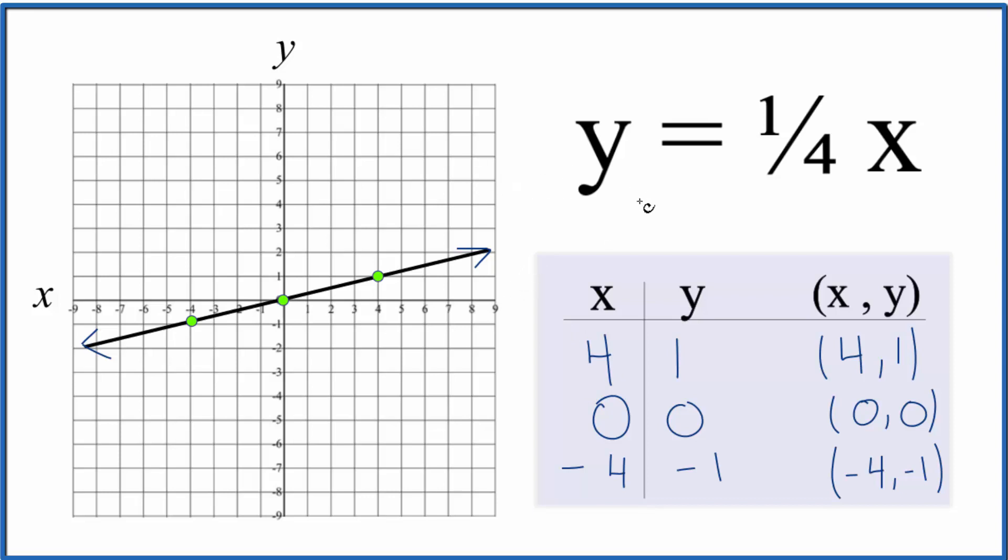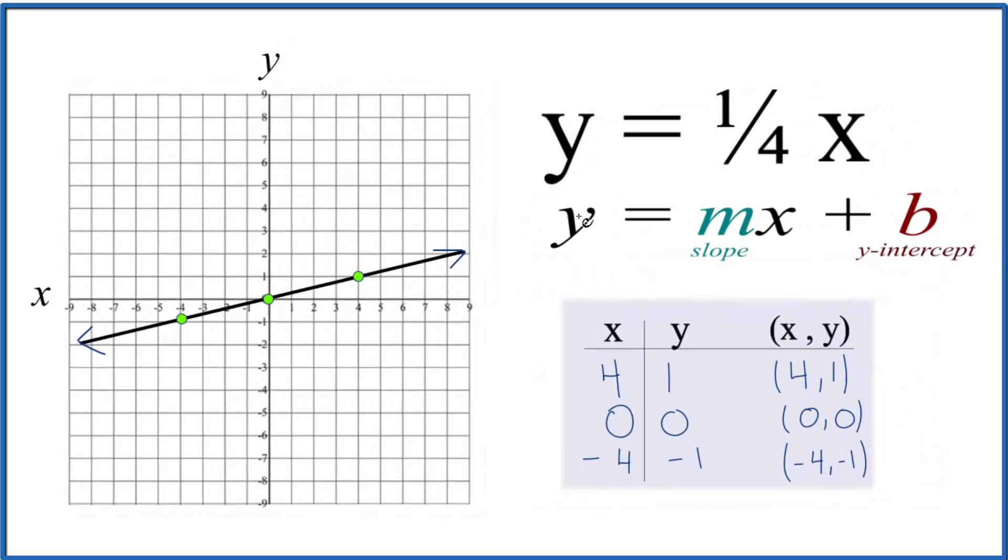Let's check our work with slope intercept form. So we have y equals mx plus b. We have our slope one-fourth. We have x, but we don't have b. So we just consider b to be zero. That means the y-intercept. The line will intercept the y-axis right here at zero.